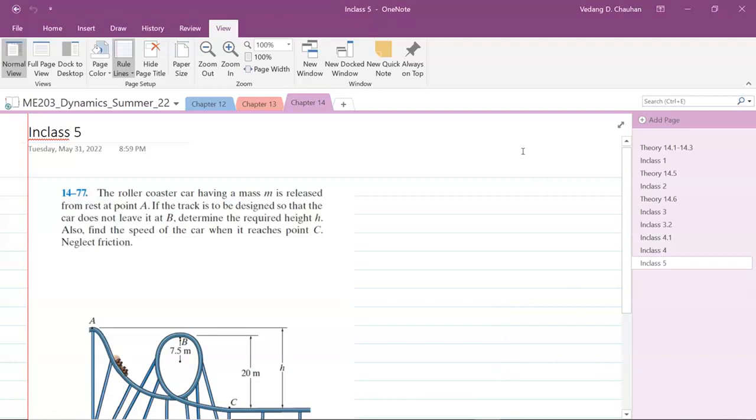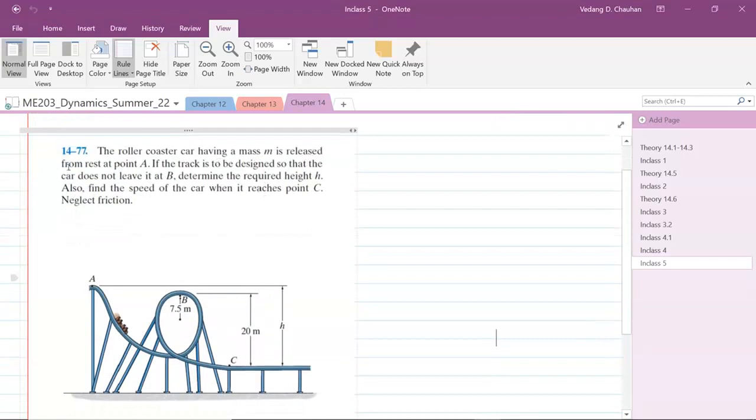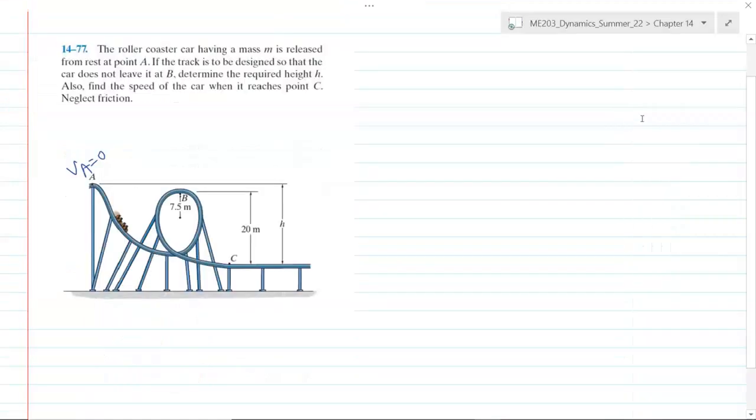In class exercise 5, chapter 14, problem number 1477: The roller coaster car having mass m is released from rest at A, meaning the velocity at A is zero. If the track is to be designed so that the car does not leave it at B, meaning the car stays in contact with B, determine the required height h.